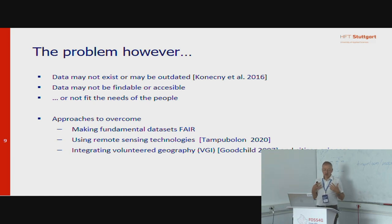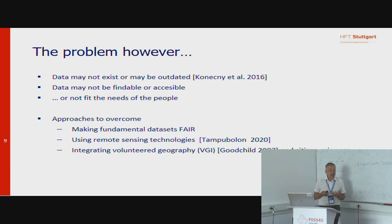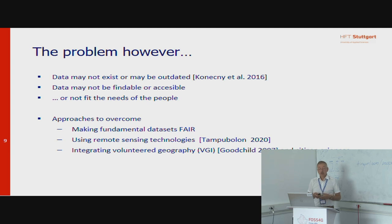It is very important, in my opinion — and this is something I try to push forward in my state of Baden-Württemberg — to make such fundamental datasets findable, accessible, interoperable, and reusable. This can be done by integrating the output of remote sensing technologies and by integrating volunteer geography, as we can find in OpenStreetMap data and in citizen science.